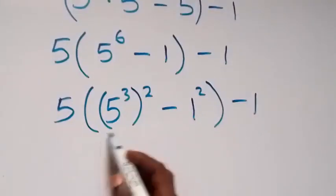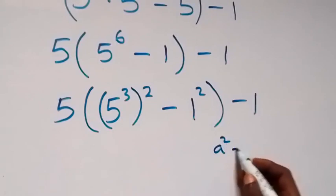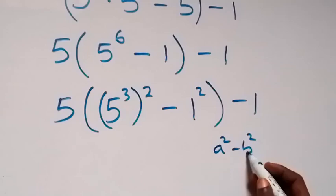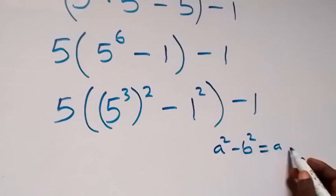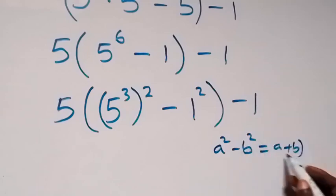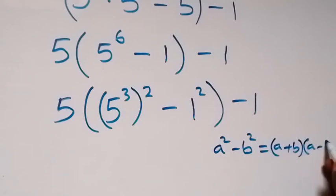Then from what we have inside this bracket, it follows the form a squared minus b squared, which gives us a plus b, then into bracket a minus b.